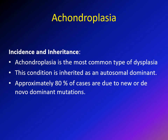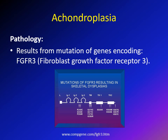About 80% of cases are due to a new dominant mutation. Achondroplasia occurs due to a gene mutation of the fibroblast growth factor receptor 3 (FGFR3). Virtually all cases — about 99% — happen due to a specific glycine-to-arginine substitution at amino acid 380 in the transmembrane domain of the FGFR3 gene.